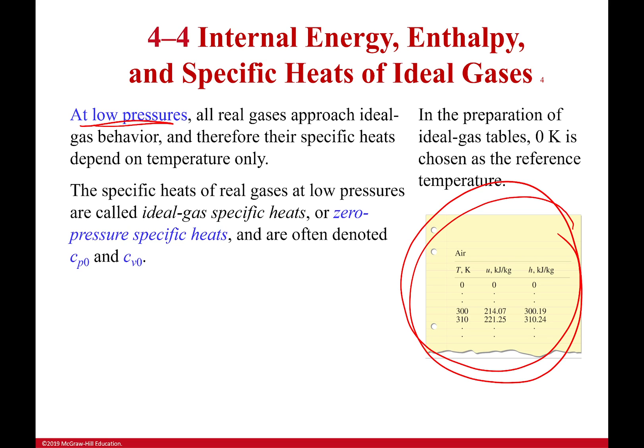We need a reference point. And so what we do is we create something called our specific heat at zero temperature, sorry, zero pressure. This is CP0 and CV0. And these can be acting as reference point. And we can use those to then tabulate our internal energy and our enthalpy based on that zero pressure scenario.